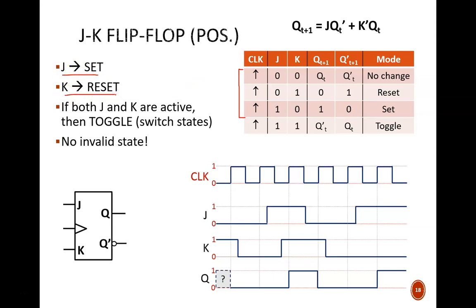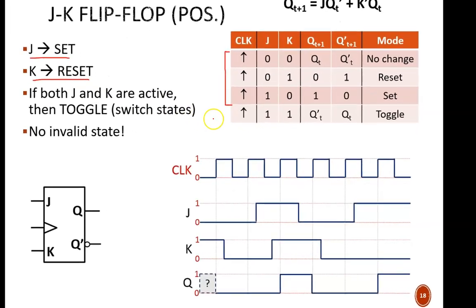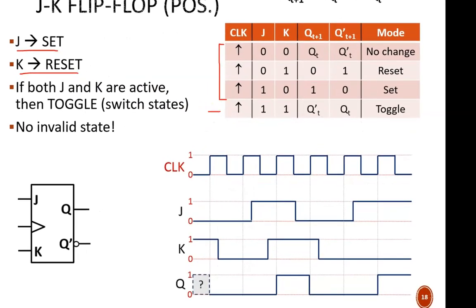But the big new mode is found in this bottom row. In an SR latch or flip-flop, the instruction set 1 1 is invalid. In a JK flip-flop, 1 1 causes a toggle, which means that the output changes state.